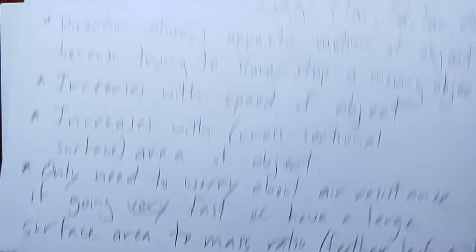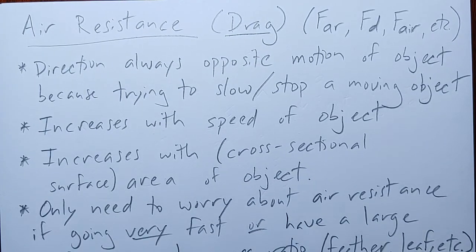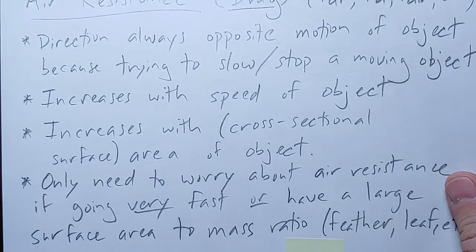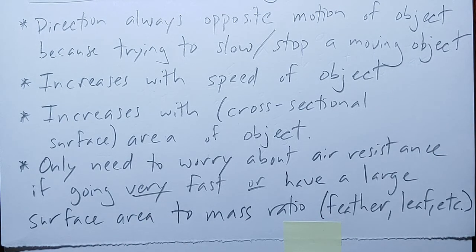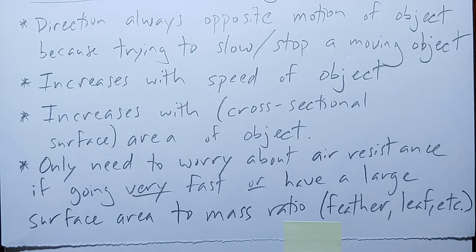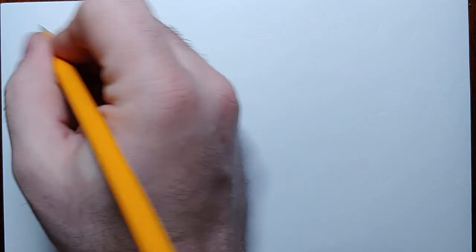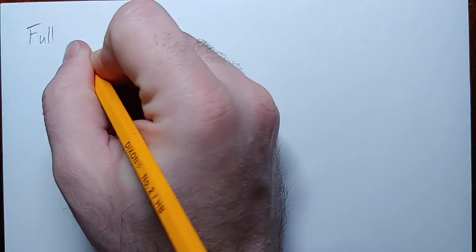In general, for most problem solving you don't need to worry too much about the details — just ask: do you need to account for air resistance at all? The two most significant factors are speed and surface area of the object. If you don't have a very large speed or large surface area relative to your mass, you don't have to worry about it. That said, there is a more complete way to calculate drag — the full drag equation.